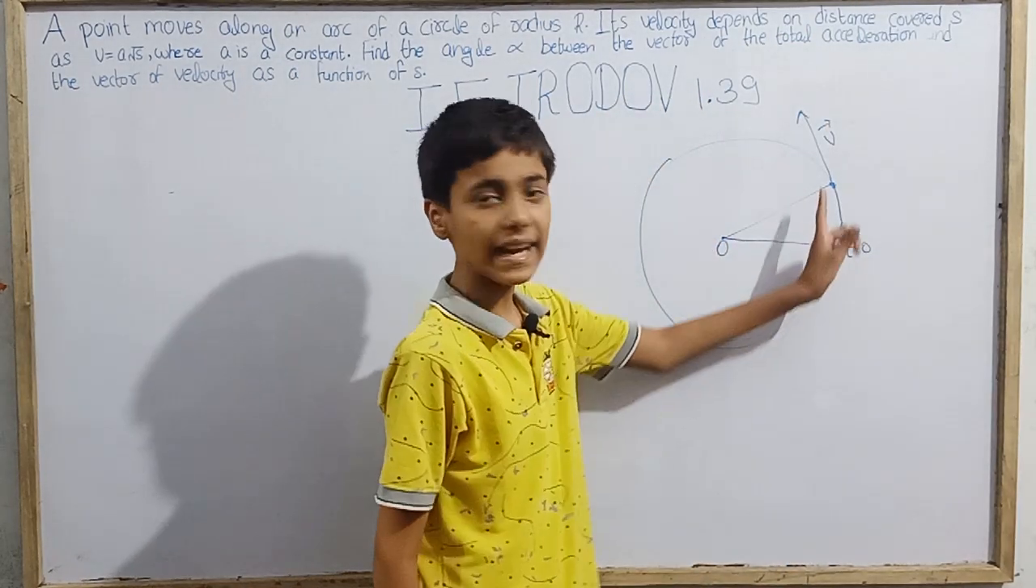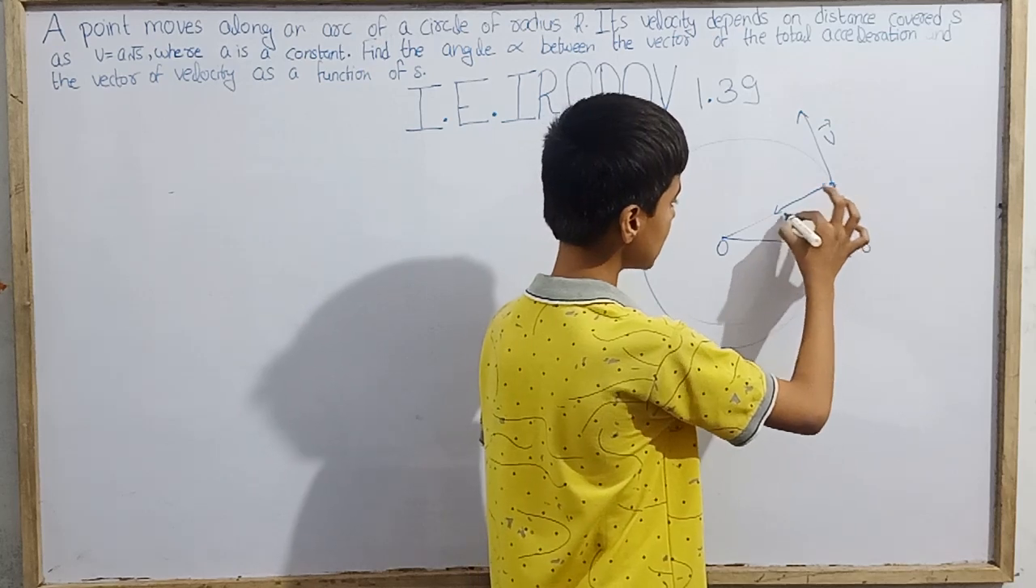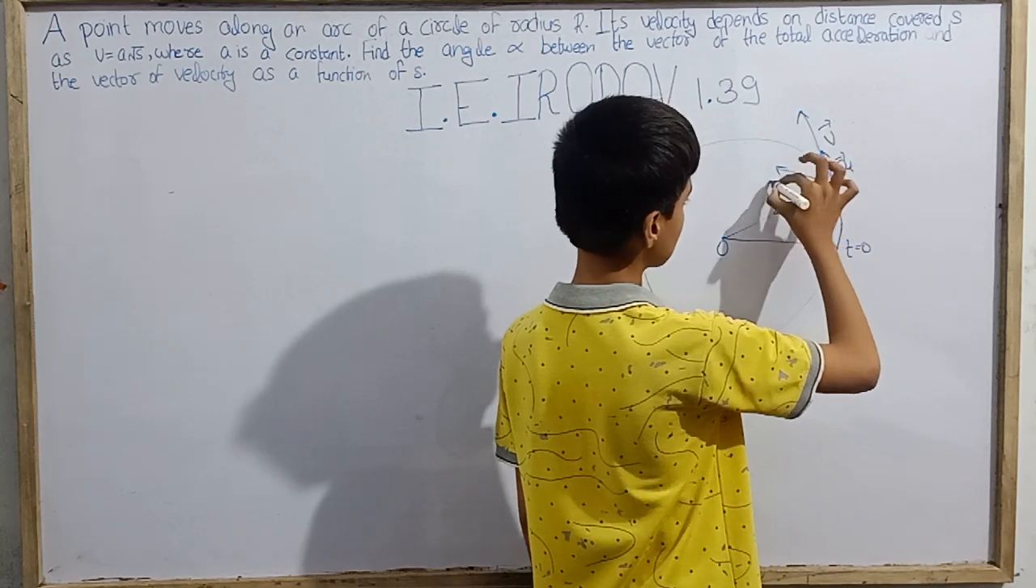So here the radial acceleration should be here, and the tangential acceleration will be in the direction of the velocity vector. The total acceleration will be somewhat this way, and which should be our tangential acceleration.